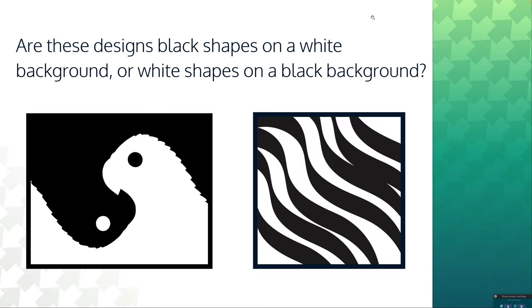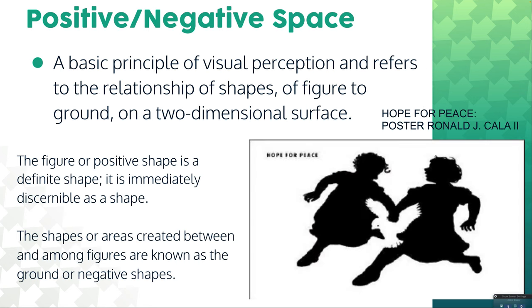Getting into figure-ground relationships, which we'll start working with for this assignment. Are these designs black shapes on a white background or white shapes on a black background? The answer is yes - it can be either or, since there's no real indication of what's the figure and what's the ground. So you can kind of play with this, like with this yin-yang bird thing or the zebra stripe - this could easily be black shapes on a white background or white shapes on a black background.